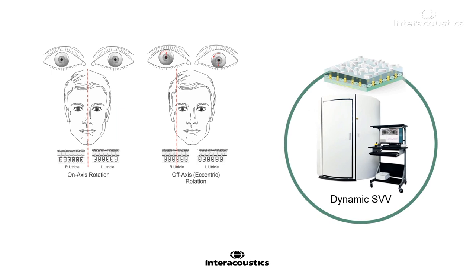To measure dynamic SVV, you need a rotation chair that is capable of off-axis or eccentric rotation. During on-axis rotation, as depicted here on the left-hand side, responses from the right and left utricles cancel each other out, and the responses are primarily mediated by the semicircular canals. If we move the chair slightly such that the axis of rotation goes through one of the utricles, as depicted here on the right-hand side — although it's exaggerated — then the off-axis rotation generates centrifugal forces and stimulates the contralateral utricle. After a prolonged rotation at constant velocity, the canal responses will subside and the utricular responses consisting of ocular counter rolling become apparent.